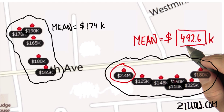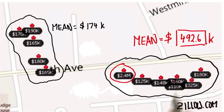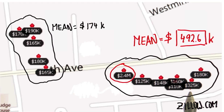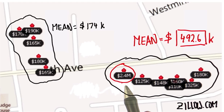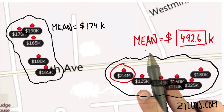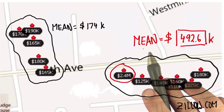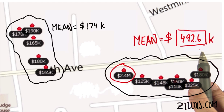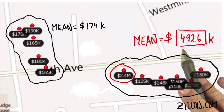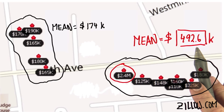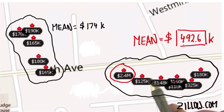Aren't we suspicious of this number? Most of the homes here are in the 100K range. There's one of 325K and one of 2.4 million. And the mean doesn't really reflect this — it makes you feel that the average home in the neighborhood is 492,000. But that's not a good description of what's happening.